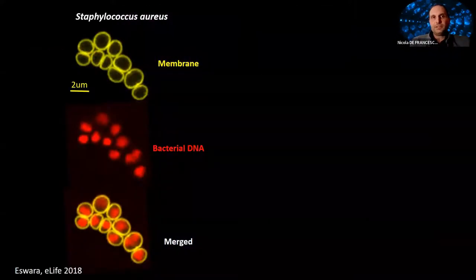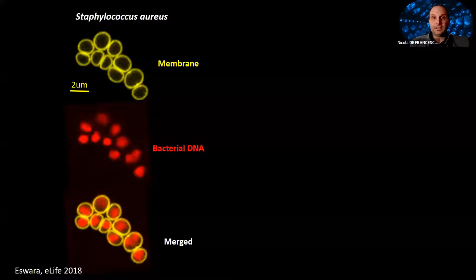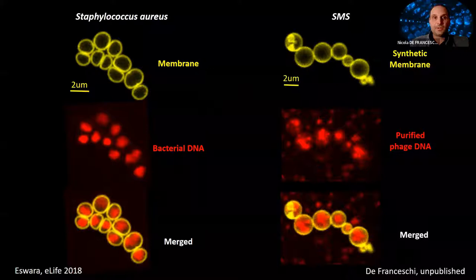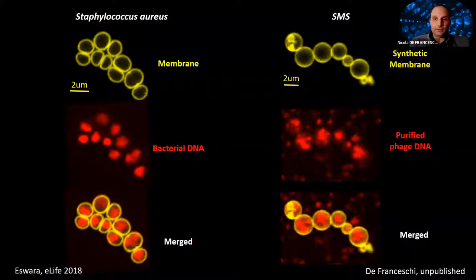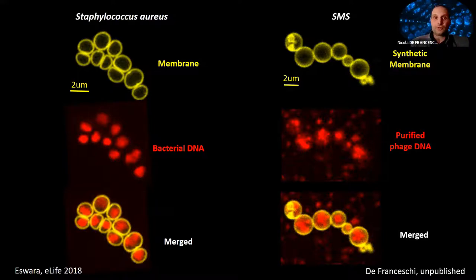The point of developing the SMS is to use it as a membrane platform for synthetic biology. This means we must be able to encapsulate macromolecules like nucleic acids and proteins. As an example, on the left you see a real bacterium with the membrane in yellow and bacterial DNA in red. On the right, a chain of dumbbells obtained with the SMS where we've encapsulated large lambda DNA molecules. With SMS it is actually easy to encapsulate DNA, and the presence of DNA does not preclude membrane deformation. The DNA even becomes segregated into the lobe by the action of the SMS — potentially relevant for genome segregation in a synthetic cell.